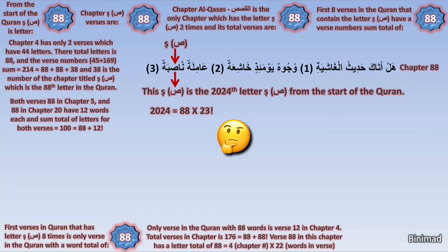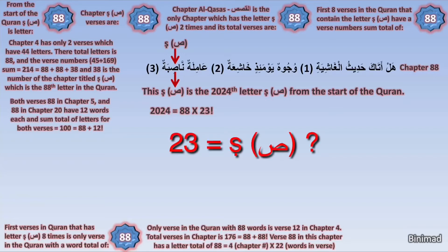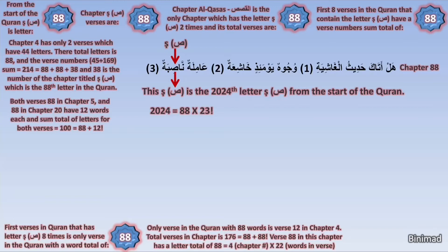But what about this 23? If you have seen my previous videos, you will know that 23 is the number of years in which the Quran was revealed and is also a main key in Quran mathematics. But there is more: 23 is also equal to the letter Saad. The name of the letter Saad in Arabic is the word Saad, and these are its letters and their order in the common Hijai alphabetic order. Amazingly, their total is 23.